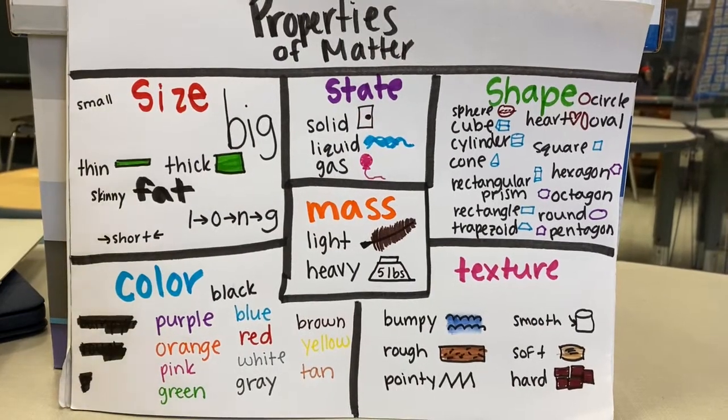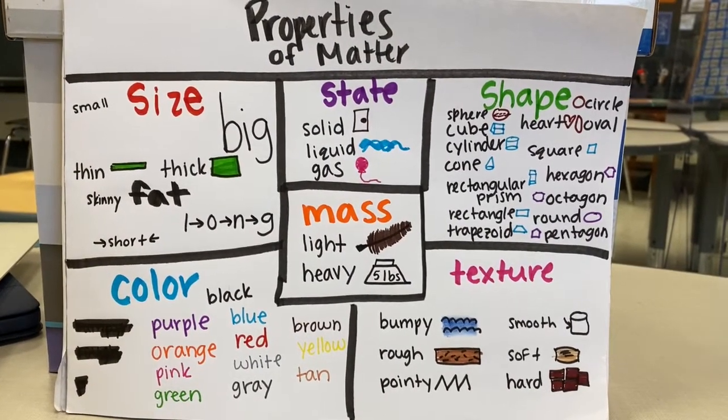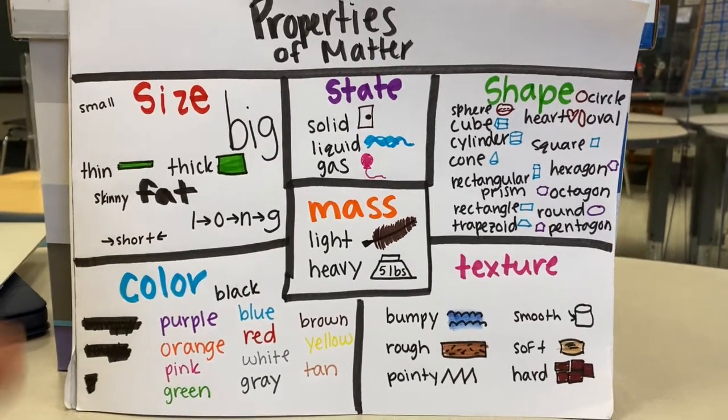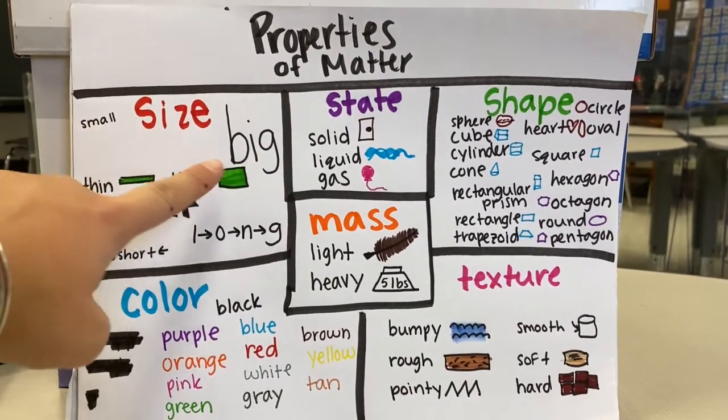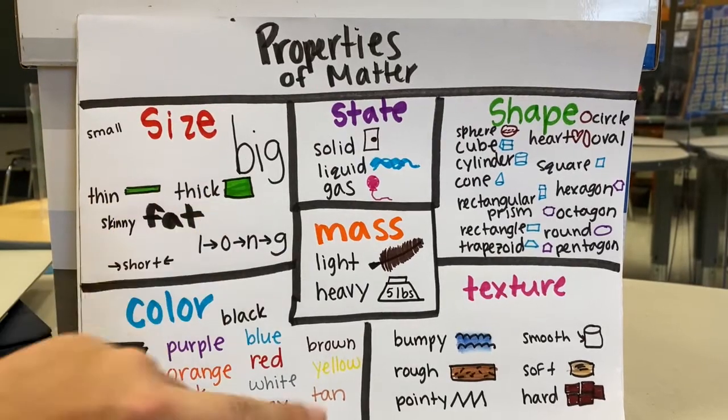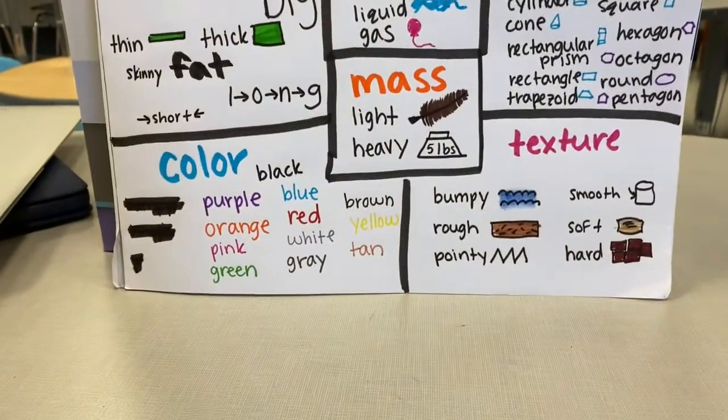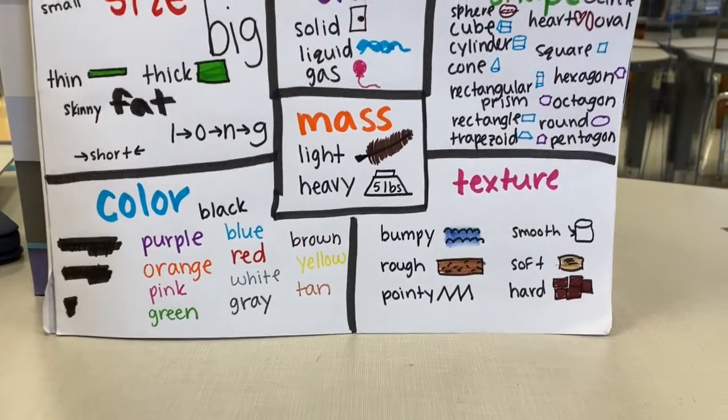Before we talk about how we can change properties of matter, let's first review our properties of matter. So we have size, so small and big, thin and thick, skinny and fat, short and long. We have color, so all the different colors that you see in the world around you.